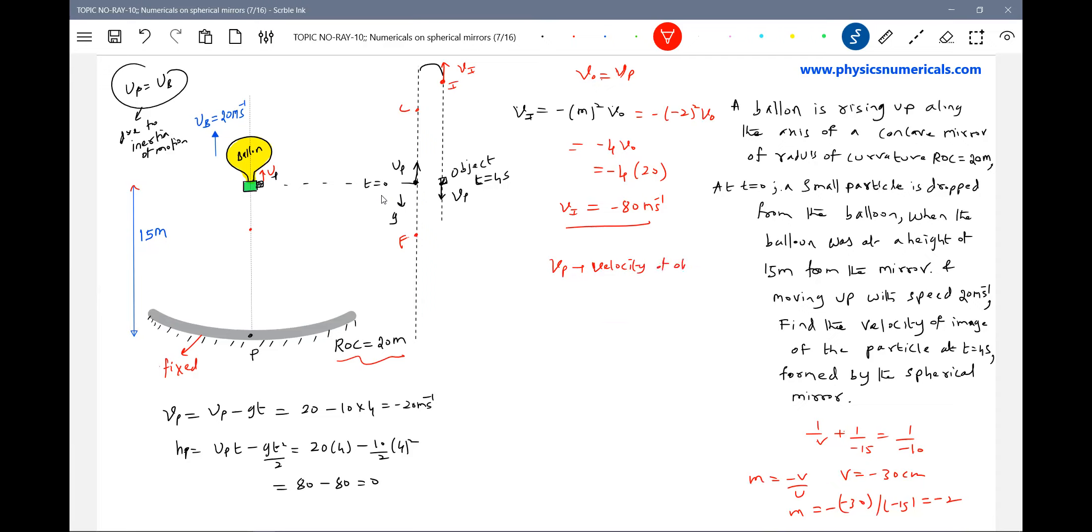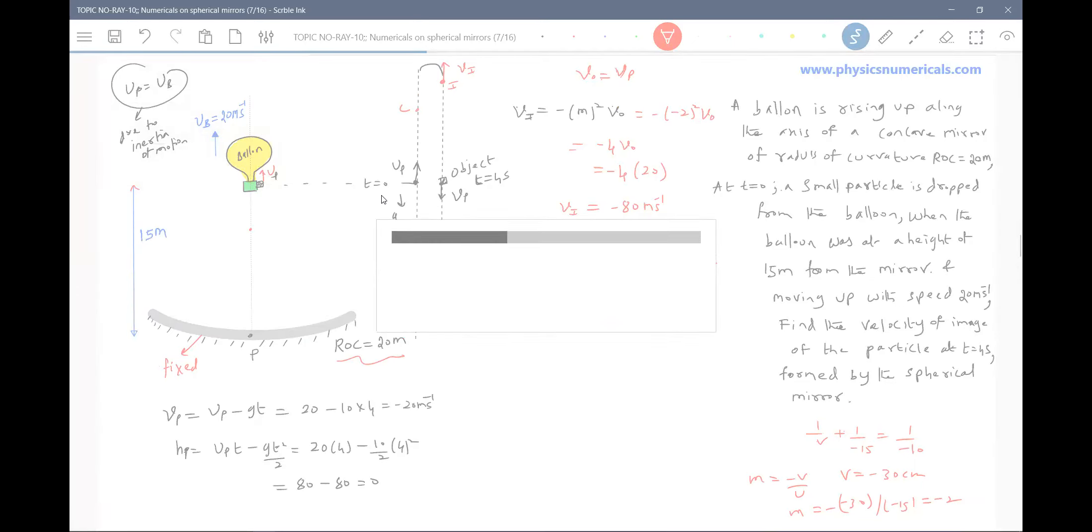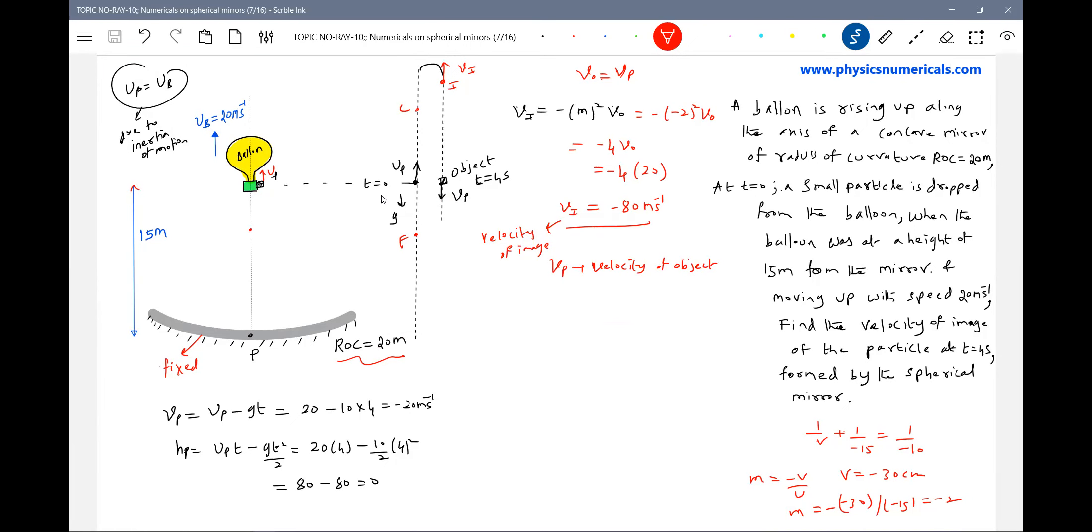Velocity of object. What is V I? Velocity of image. The balloon will be continuously ascending. We are not bothered. Once the particle detaches, there's no need of balloon.